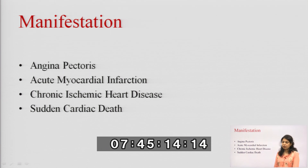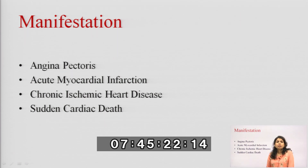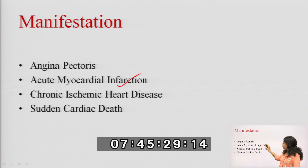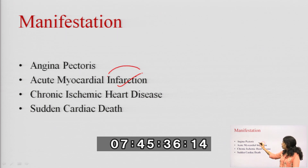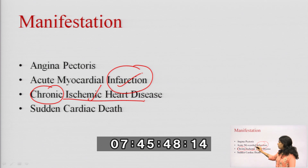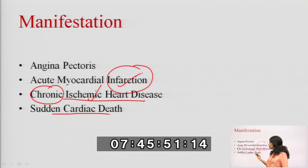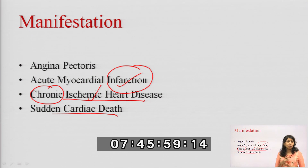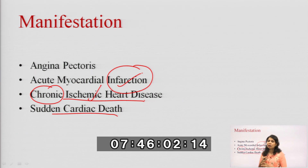Coming to manifestations of ischemic heart disease: it may lead to angina pectoris, which we are discussing. Then acute myocardial infarction — the muscle portion of the heart has infarction, meaning dead tissue, because oxygen is not supplied. Then chronic ischemic heart disease — for a very long duration there is ischemia and less oxygen supply — and it may ultimately lead to sudden cardiac death.